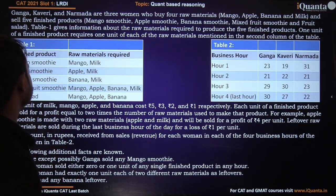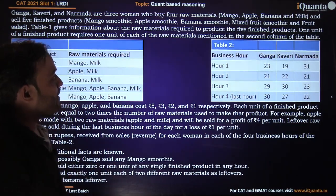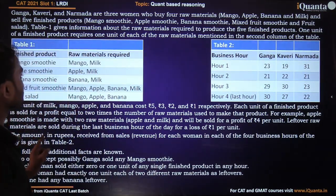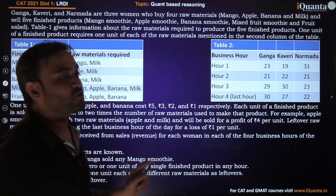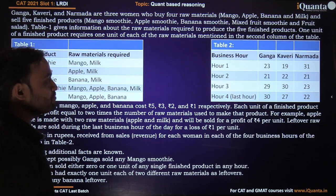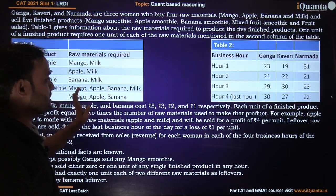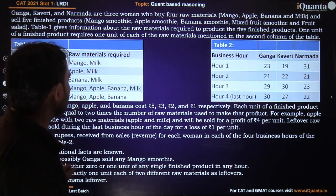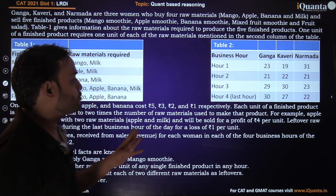Table one gives information about the raw materials required to produce each finished product. One unit of a finished product requires one unit of each raw material mentioned. For example, one mango smoothie requires one unit of mango and one unit of milk. One unit of milk, mango, apple, and banana cost five rupees, three rupees, two rupees, and one rupee respectively.